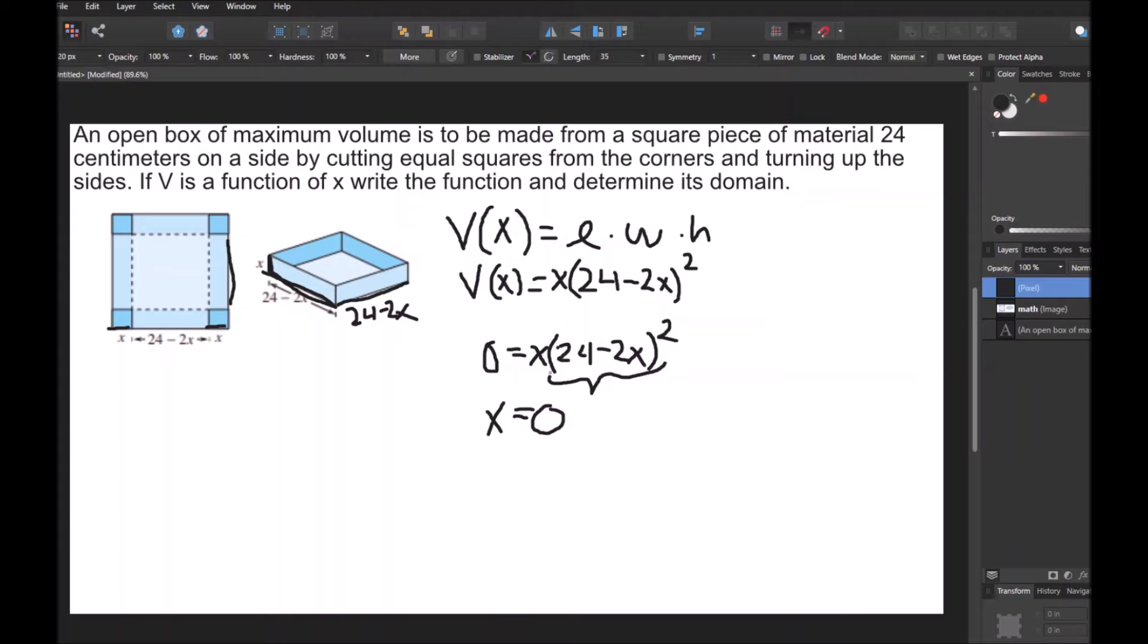Because then, if this whole thing is 0, that times whatever X is will also be 0. So I'm going to do (24 minus 2X) squared equals 0. I'm going to take the square root to undo the square. 24 minus 2X is what we're left with. And then the square root of 0 is just 0.